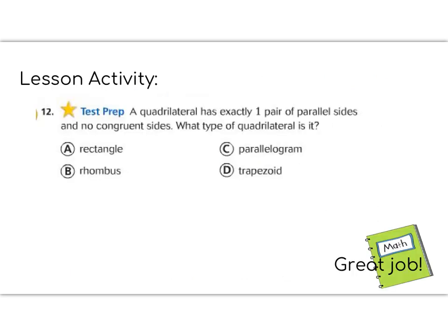Today's lesson activity is the test prep question. The test prep question is on the last page of your lesson pages. It says, a quadrilateral has exactly one pair of parallel sides, but no congruent angles. What type of quadrilateral is it?